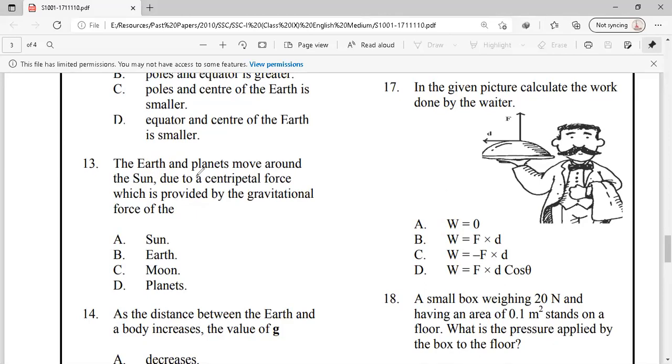The earth and the planets move around the sun due to centripetal force which is provided by the gravitational force of the sun. Planets and earth move around the sun, so they need centripetal force and that centripetal force comes from gravitational force that the sun provides. Option A is the right answer.